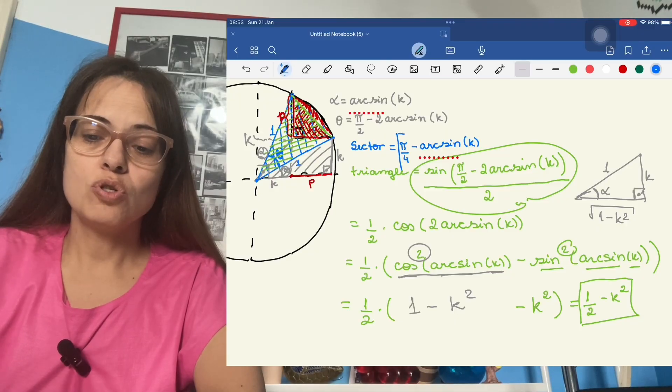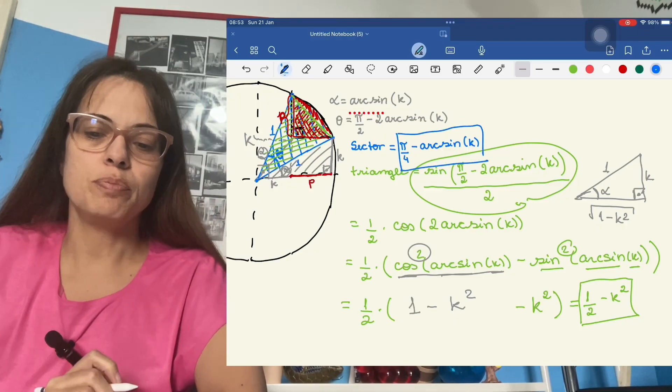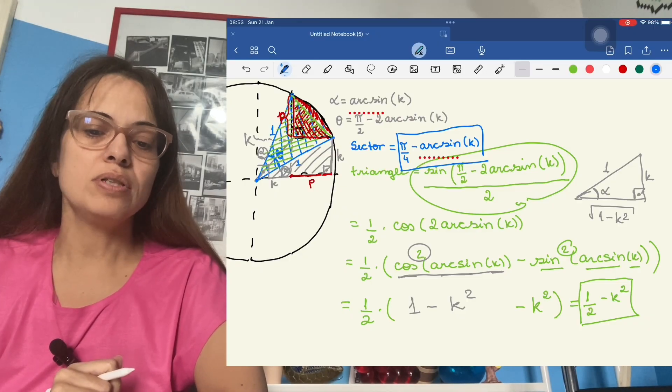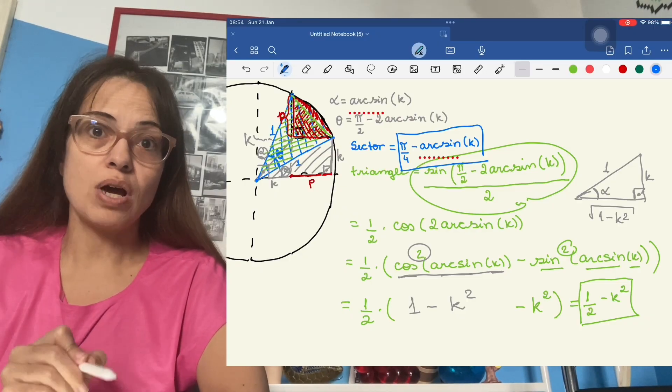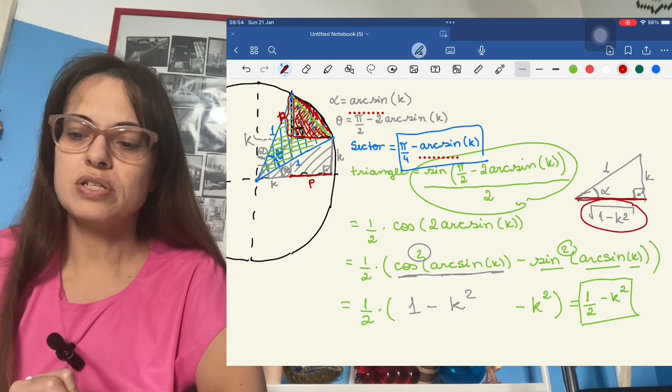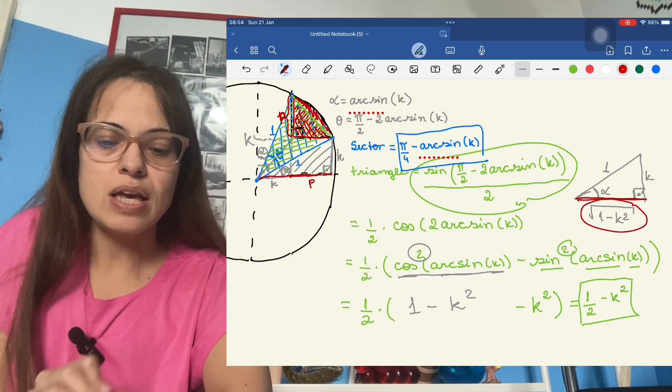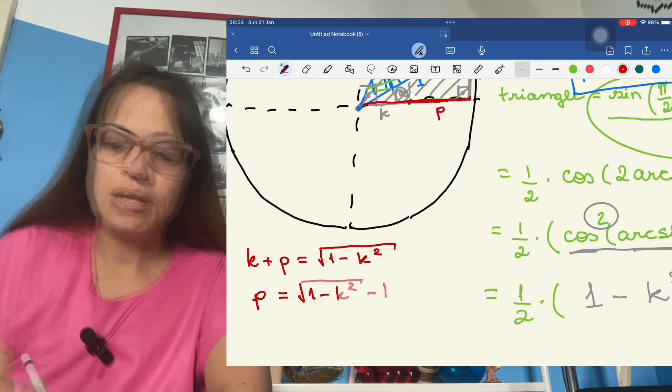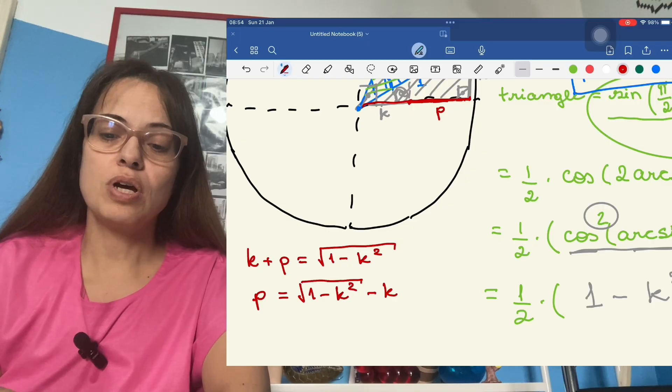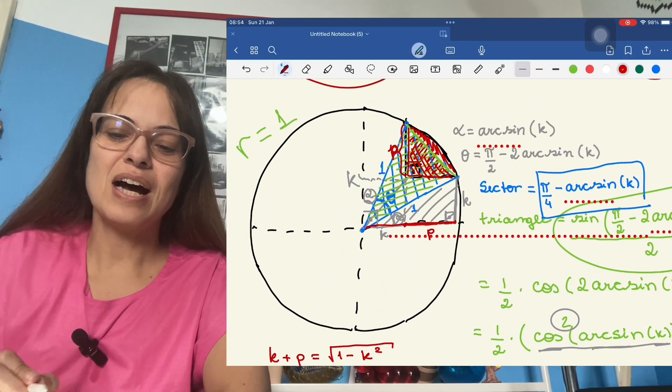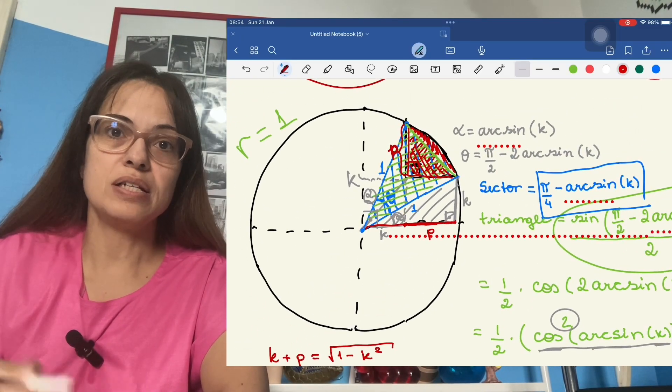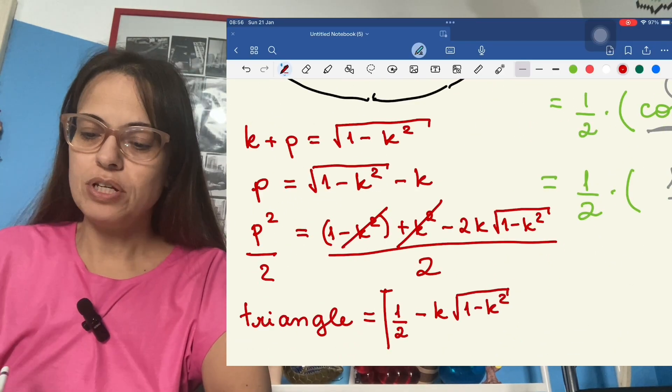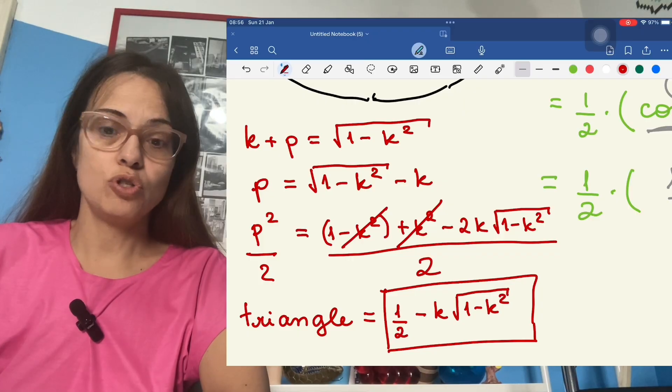And remember that we also already have the area of the blue sector in the picture. So now the only thing that we need is the red triangle, the square root of one minus K squared. That segment is also K plus P. So we just subtract K on both sides to get the value of P. And now to get the area of the triangle, since it is a right triangle, I'm just going to do base times height divided by two. That is P squared over two. So that's the third piece that we needed to put together the solution to our problem.